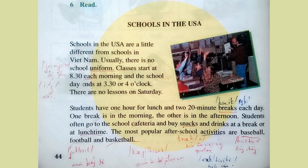Schools in the USA. Schools in the USA are a little different from schools in Vietnam. Usually, there is no school uniform. Classes start at 8.30 each morning, and the school day ends at 3.30 or 4 o'clock. There are no lessons on Saturday. Students have one hour for lunch and two 20-minute breaks each day.